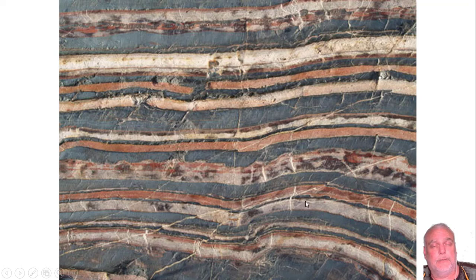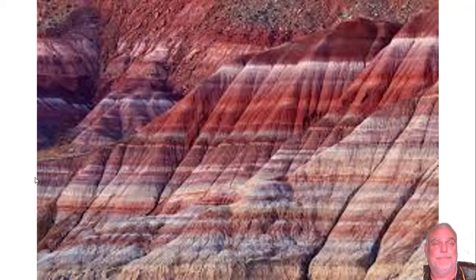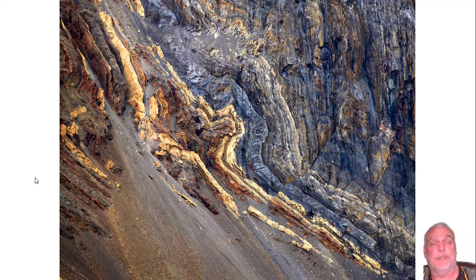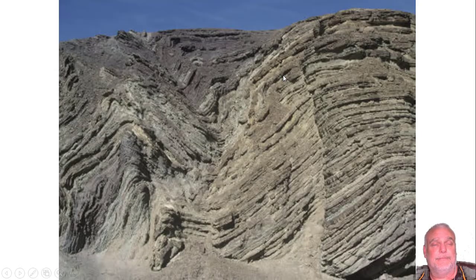This one's showing a little bit of folding - you can see here how it's not horizontal. The layers are laid down horizontally originally, and then over time, maybe there's compression, and the rock layers get folded or warped. Here you can see some tilting - this would have been horizontal originally. You'd see some tilting and folding as well. Very dramatic. Can't imagine the amount of forces and power that must have gone into this kind of folding.